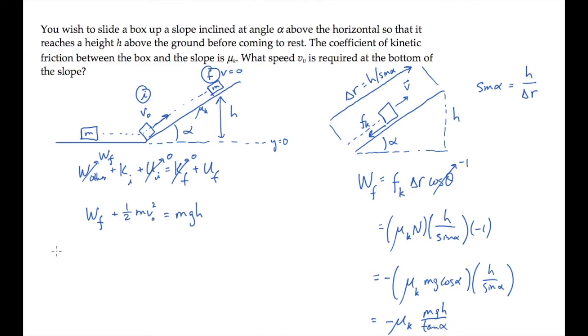We bring that result back over to our work and energy equation, substitute it in, and now we can just solve for v0, the initial speed.